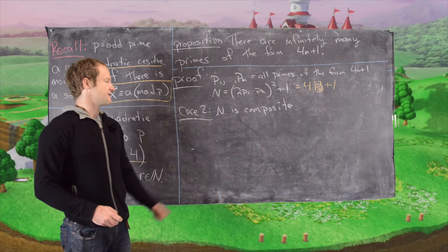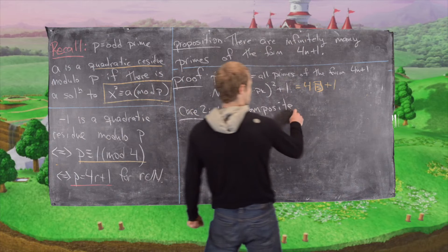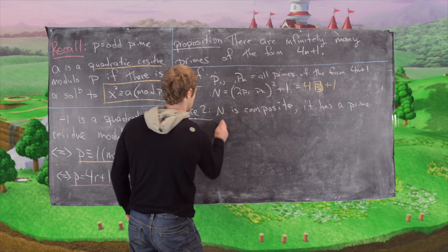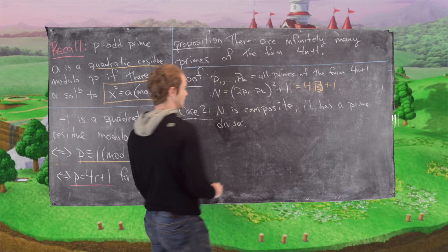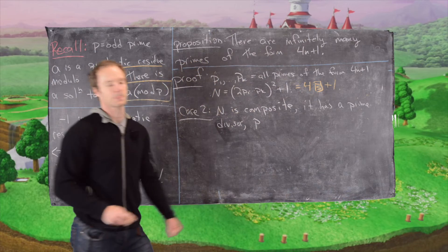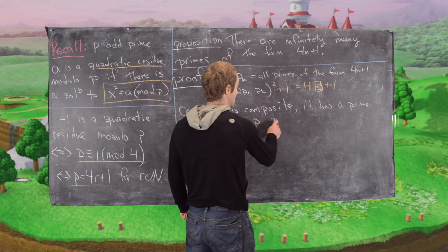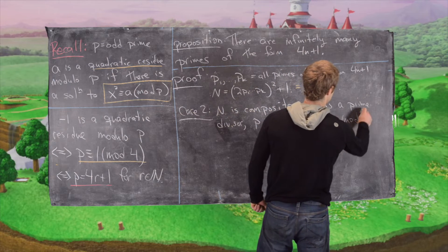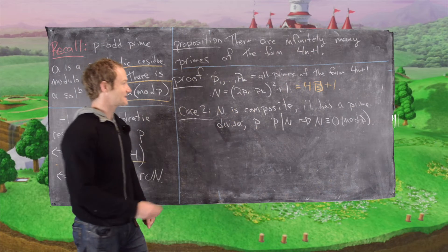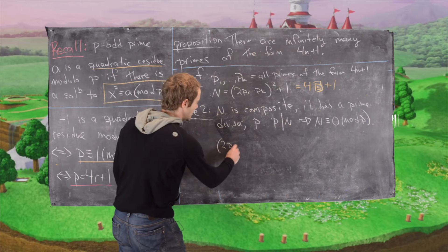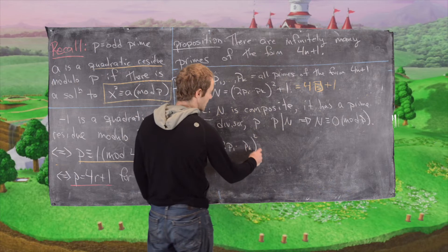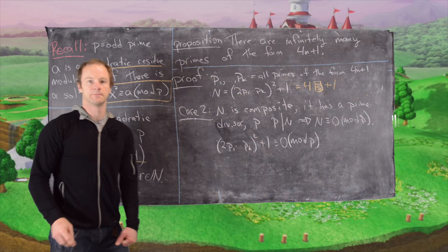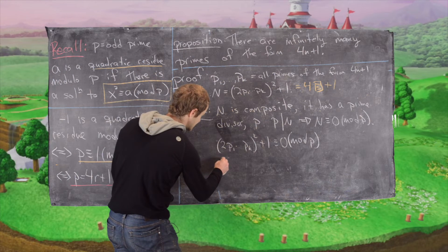So the next thing that we want to consider is what if N is composite. If N is composite it has a prime divisor. Let's call that prime divisor p. But now notice that means p divides N, which is the same thing as N is congruent to zero mod p. That's the same thing as saying 2p1 up to pk squared plus 1 is congruent to 0 mod p. I've just replaced N with our definition of N.